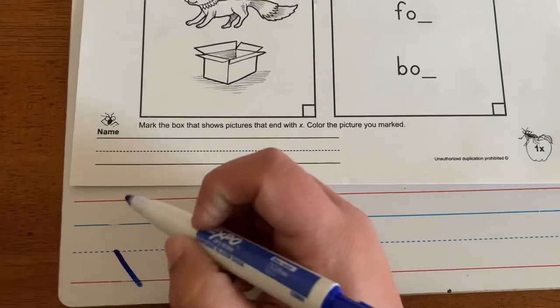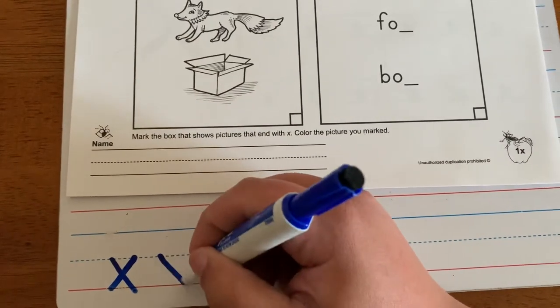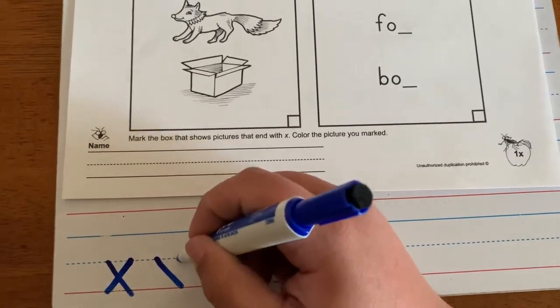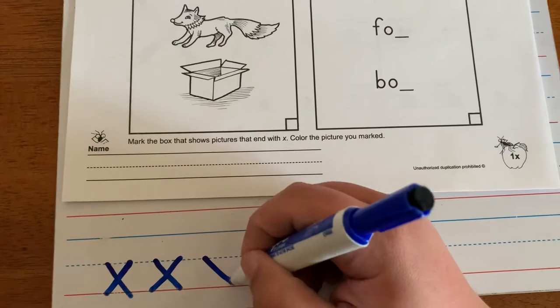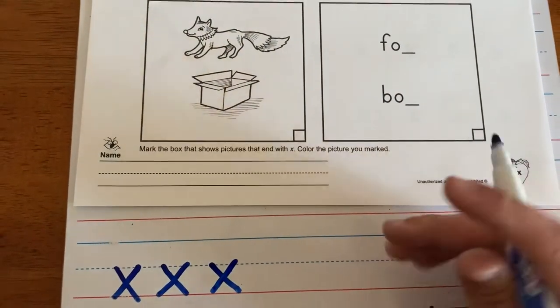So pick up, slant down, pick it up, slant down the other way. Six fox in a box, like X marks the spot. Now we're gonna make uppercase.